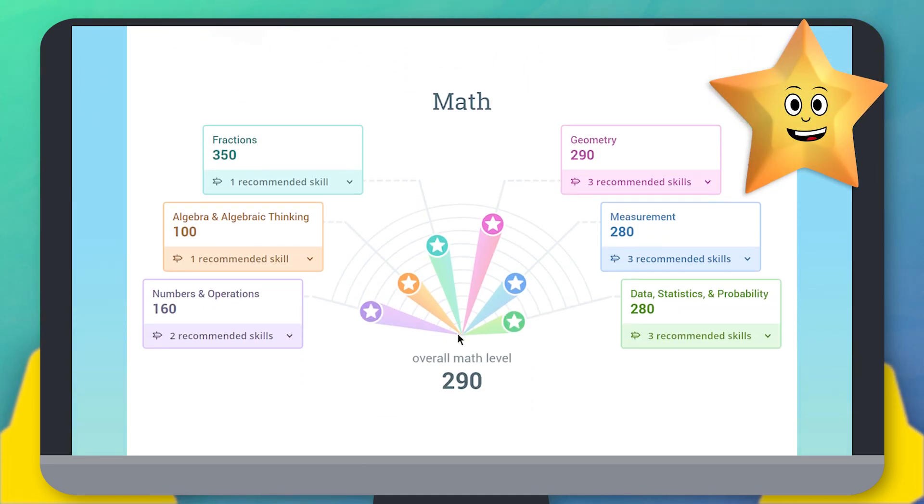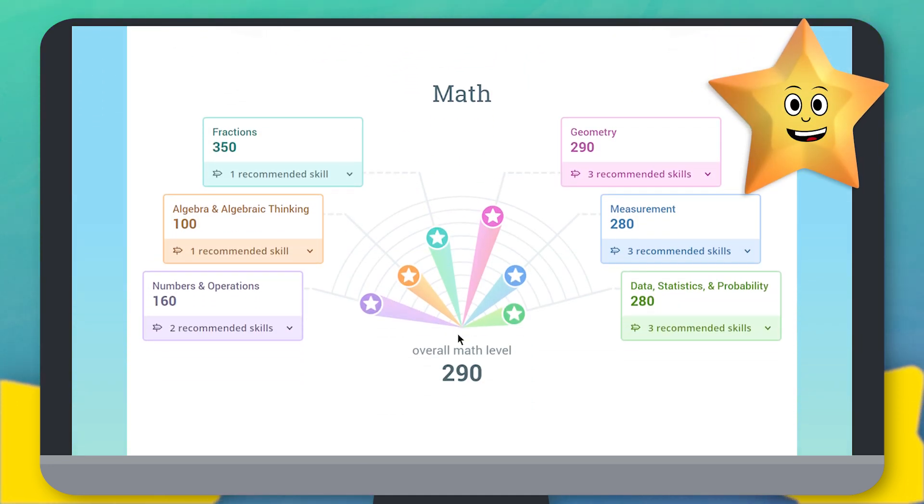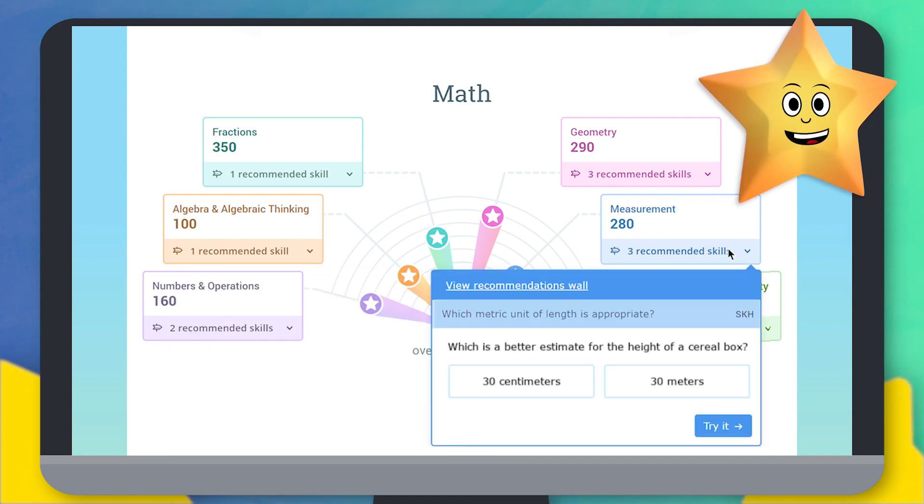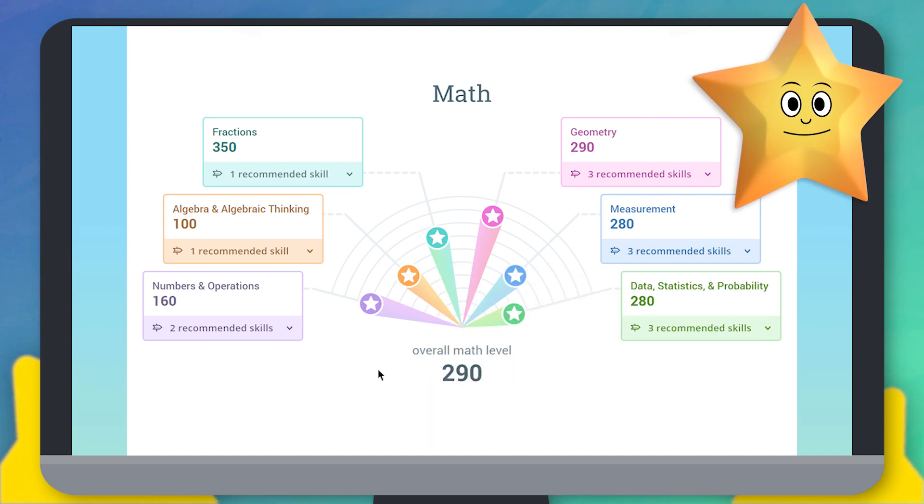Once you have all of your stars, you're ready to move on to the exciting part. Based on your work in the diagnostic arena, IXL picks skills just for you that will help you grow from where you are. Choose at least two skills a week to work on and aim for a smart score of 80.